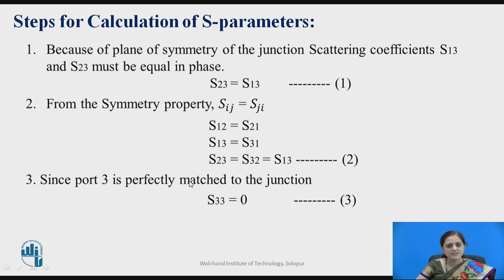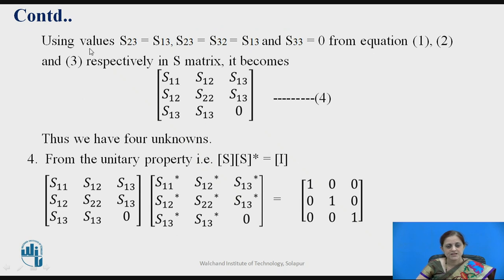Since port 3 is perfectly matched to the junction, there is no reflection at port 3 because there is perfect matching between the junction and the source, and therefore S33 equals 0. Using all these values in the S-matrix from equations 1, 2, and 3, we get the matrix shown in equation 4. Thus, we have four unknown values: S11, S12, S13, and S22. Finding these values and substituting them into the scattering matrix gives the scattering coefficients for H-Plane T-Junction.